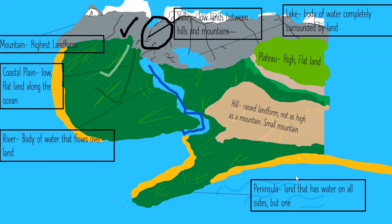There are way more landforms and water forms, but we're taking it slow today. Last but not least, peninsula: land that has water on all sides but one. You can see it has water on this side, that side, and that side, but not on this side — here it connects to the rest of the island.